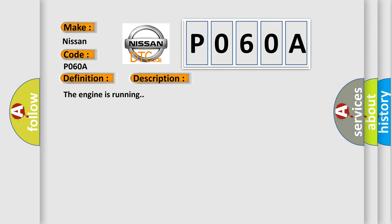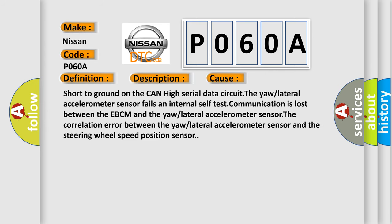This diagnostic error occurs most often in these cases: short to ground on the CAN high serial data circuit, the lateral accelerometer sensor fails internal self-test, communication is lost between the EBCM and the lateral accelerometer sensor, or the correlation error between the lateral accelerometer sensor and the steering wheel speed position sensor.